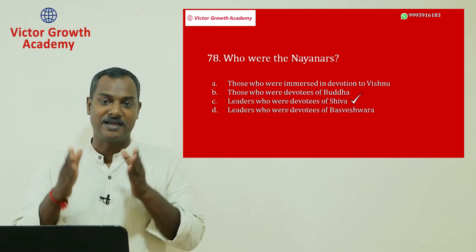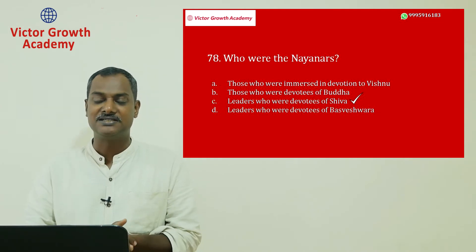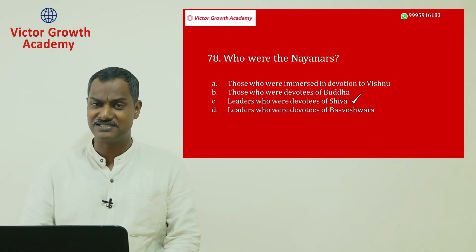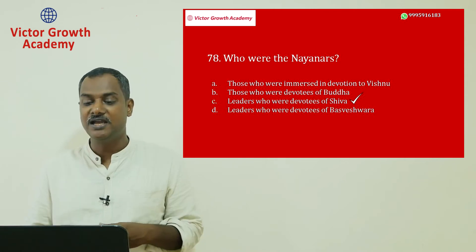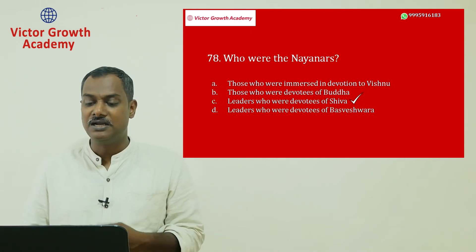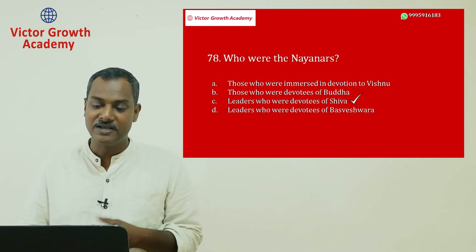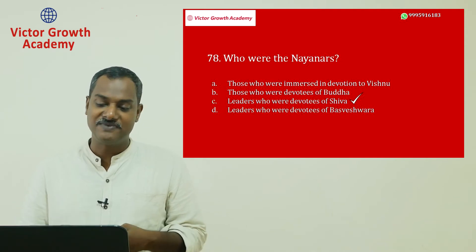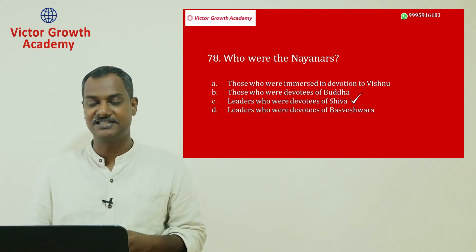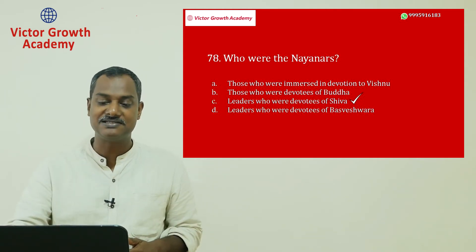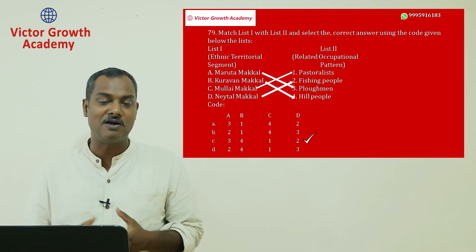Question number 78: who are the Nayanmars? This was discussed in class, taken from NCERT sixth or seventh standard history. The options are devotees of Vishnu, Buddha, Shiva, or Basaveshwara. Nayanmars are the devotees of Shiva — they started the concept of the Bhakti movement cult in Tamil Nadu. Question 78 answer is C.